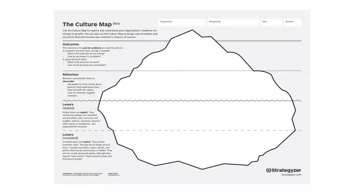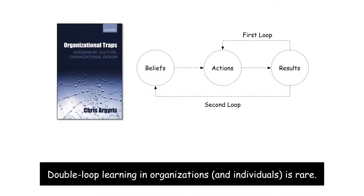My friend Dave Gray has a culture map built on some of Edgar Schein's ideas — a tool you can get online for free to start mapping your organization's culture. Both Dave and Edgar would agree it's really hard to change a culture. Part of the reason is double loop learning, a term coined by Chris Argyris. Double loop learning in organizations and individuals is extremely rare.